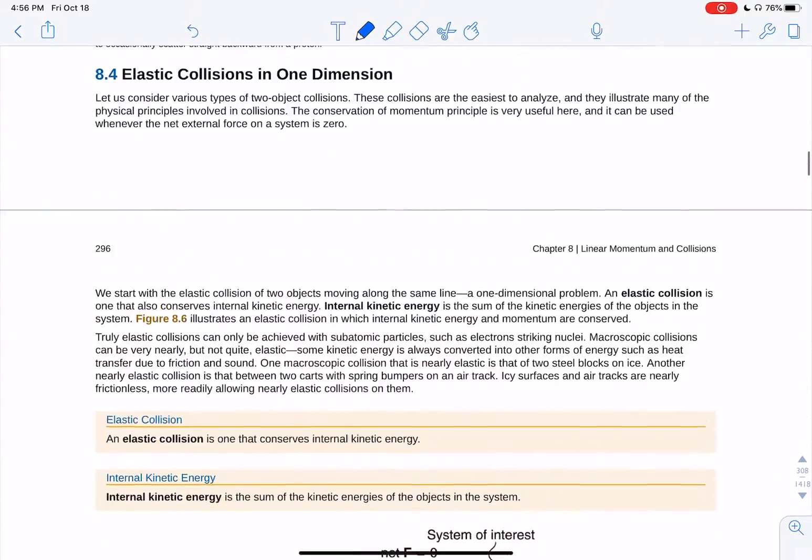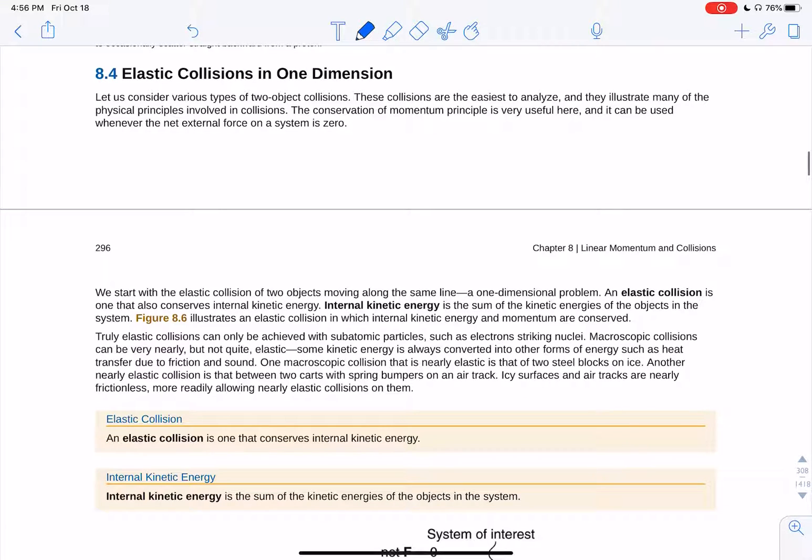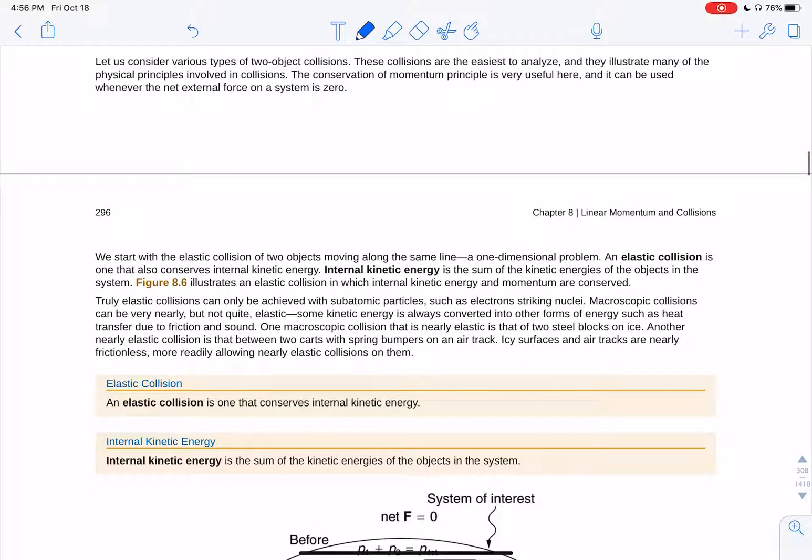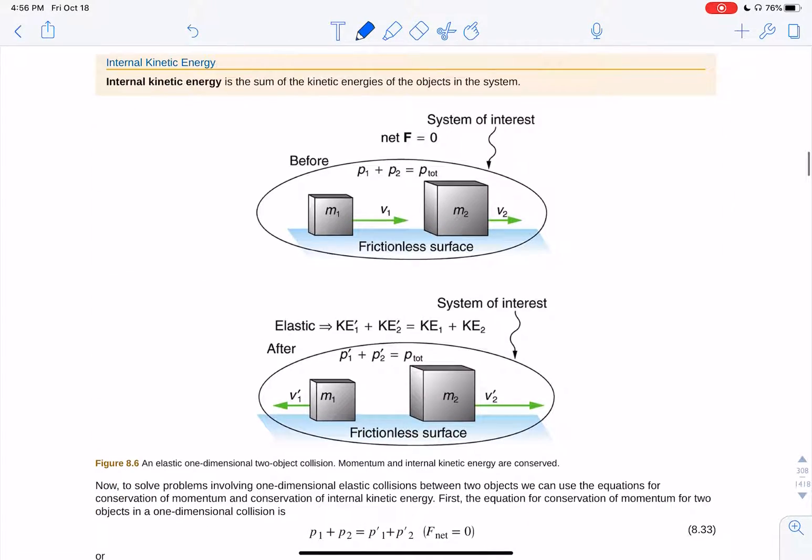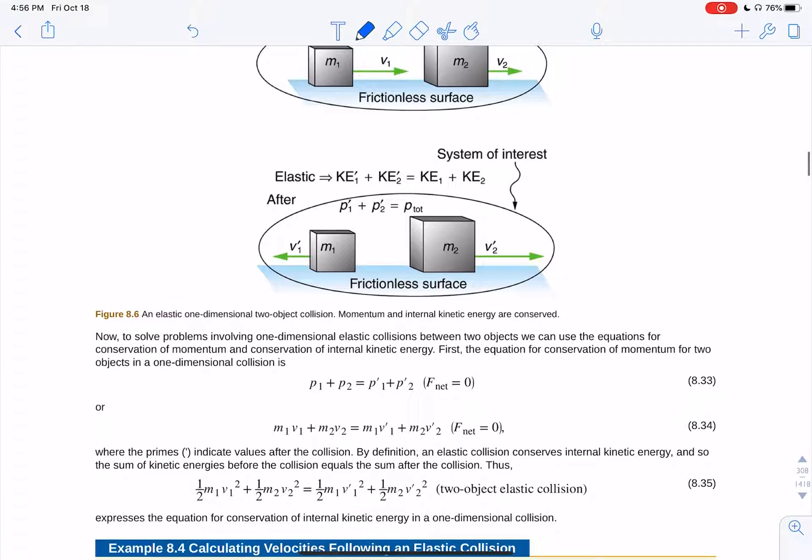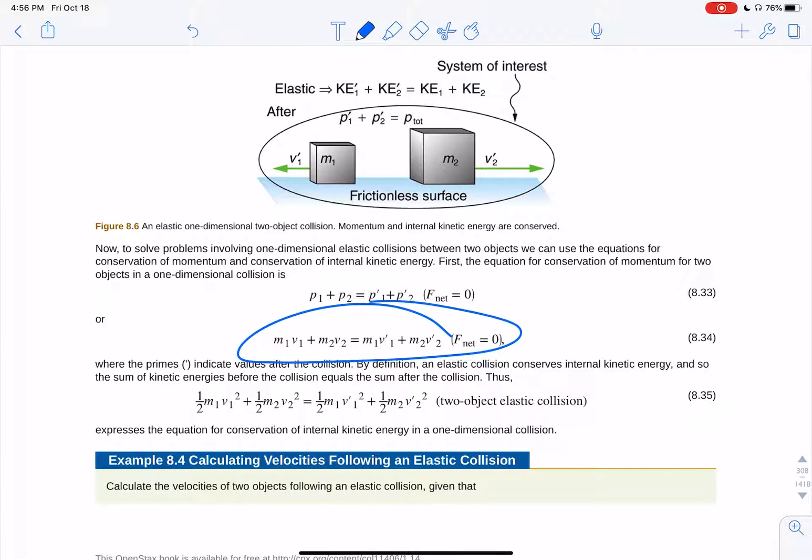So collisions - there's two types of collisions, elastic and inelastic collisions. An elastic collision is where things bounce off each other. They bounce off, and momentum is conserved, and kinetic energy is conserved. So you have two statements.